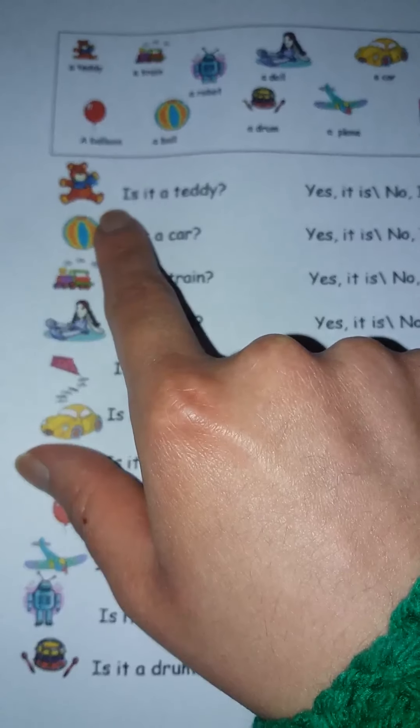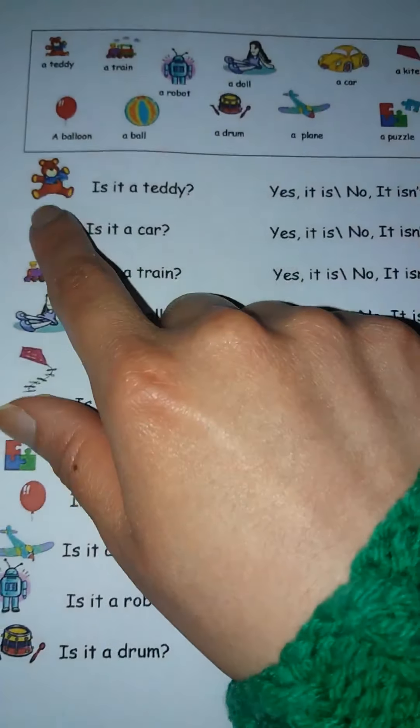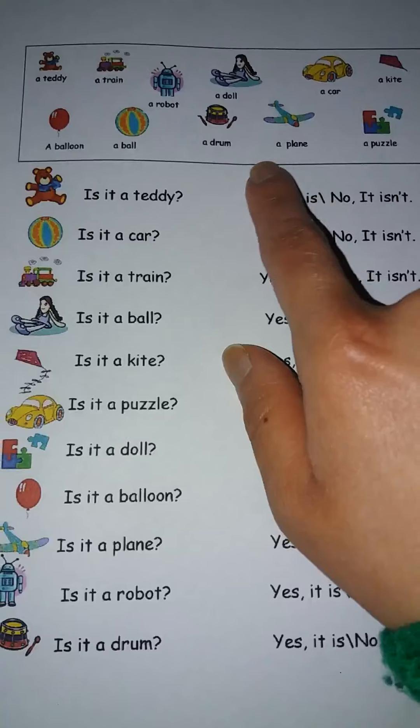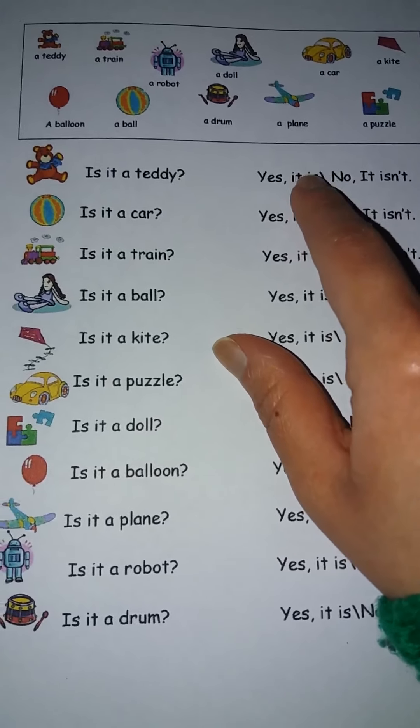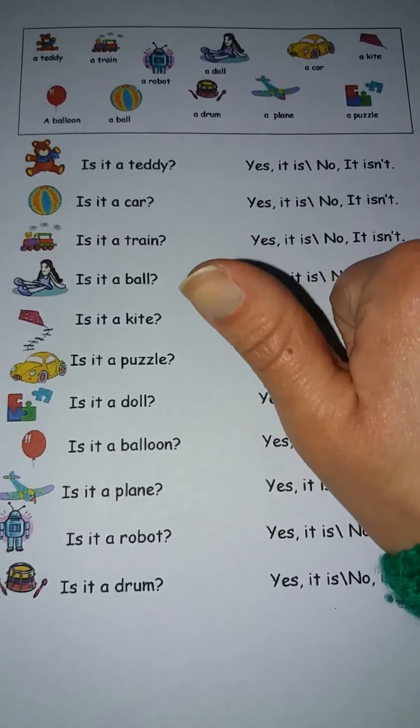Entonces van a mirar la imagen y van a decir, is it a teddy? Yes, it is. Entonces van a circular la primer respuesta. Yes, it is. Sí, es. Ok? Very good.